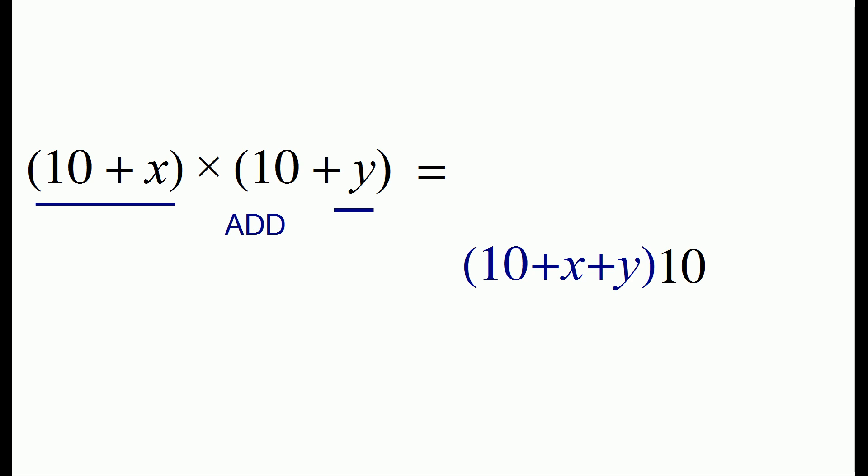The second step of the process was to take the units digits of both numbers, x and y, and multiply them together. So that would give us xy.